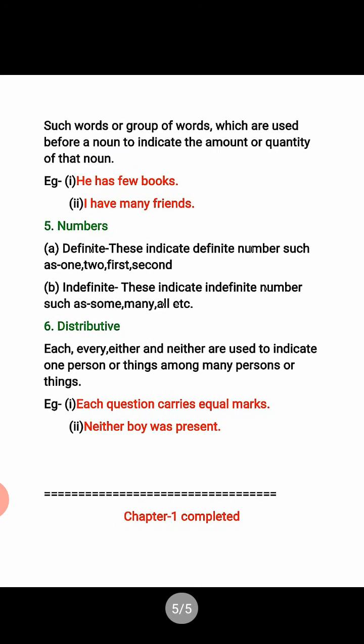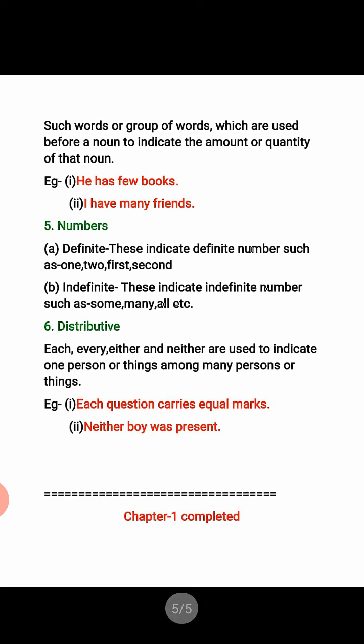Quantifiers: such words and groups of words which are used before a noun to indicate the amount or quantity of that noun. For example: he has few books; I have many friends. As the name indicates, quantifiers tell us about quantity or amount. Fifth type: numbers. They are of two types — definite, which indicate definite numbers such as 1, 2, 1st, 2nd; and indefinite, which indicate indefinite numbers such as few, some, many, all.